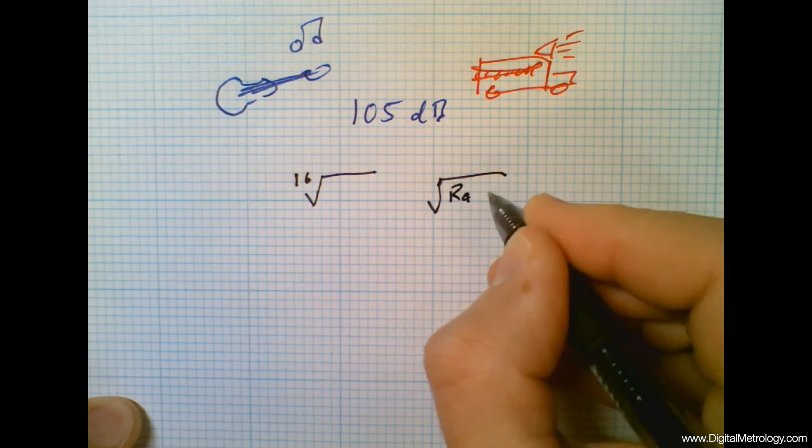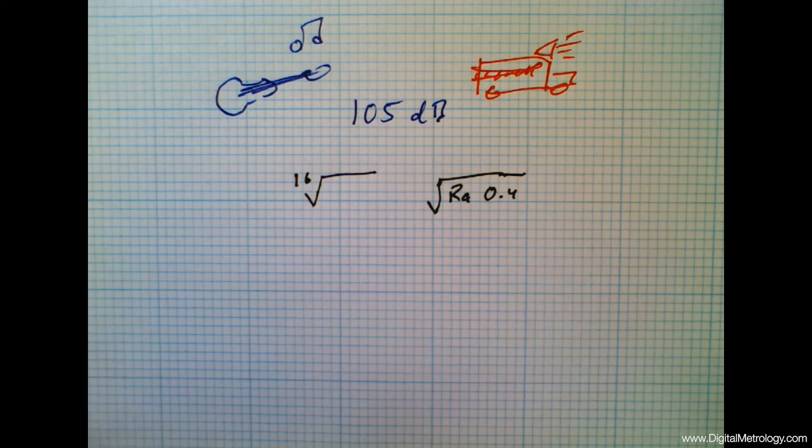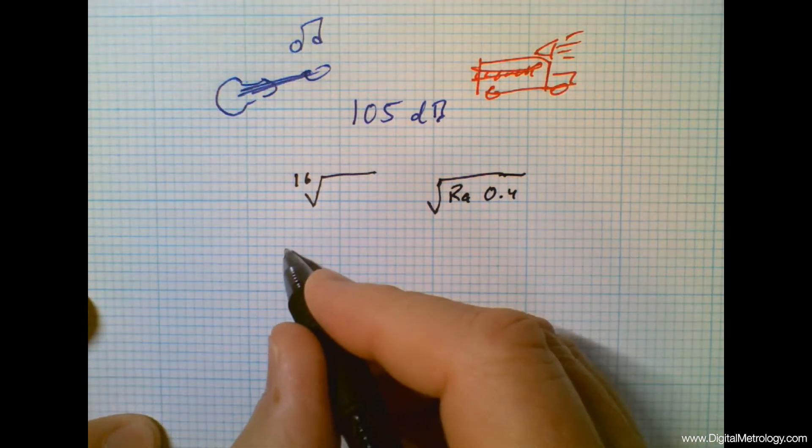Or maybe we'll say RA of 0.4 micrometers in a little more modern way of saying it. But this is the same thing. This is saying we have a number to describe roughness but we're not really describing the shape of the roughness.